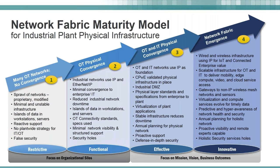That's the network maturity model. Most customers find themselves somewhere between one and two. Some of the more progressive manufacturing plants have taken advantage of CPWE and are at level three, and some are now pushing the envelope and moving into the network fabric emergence stage.